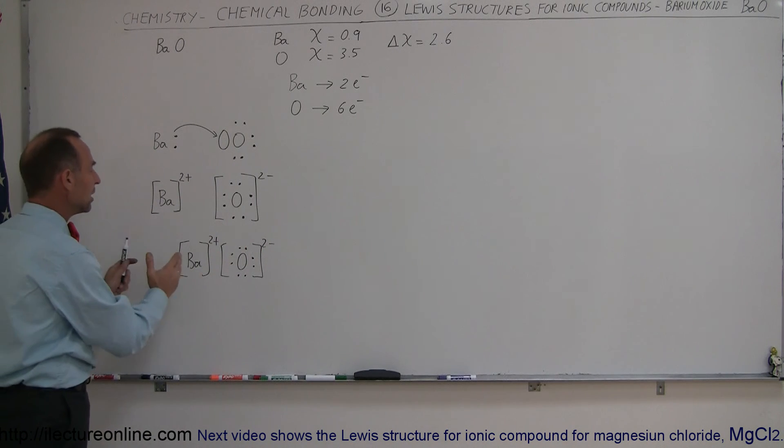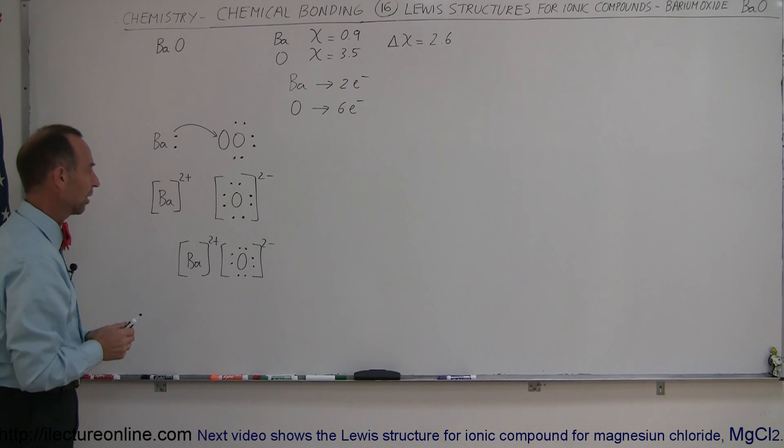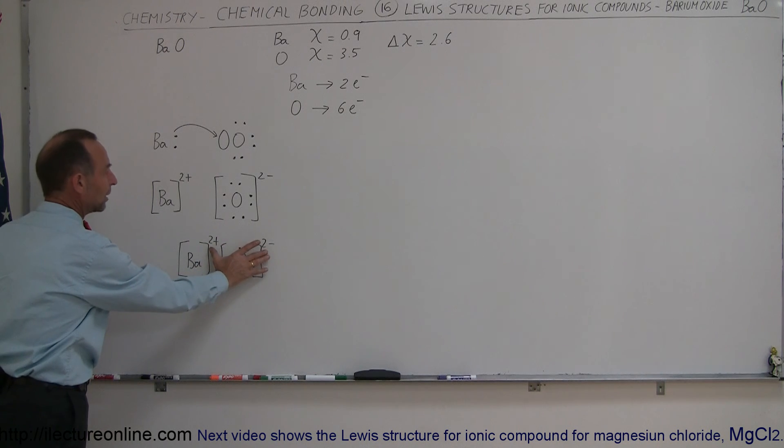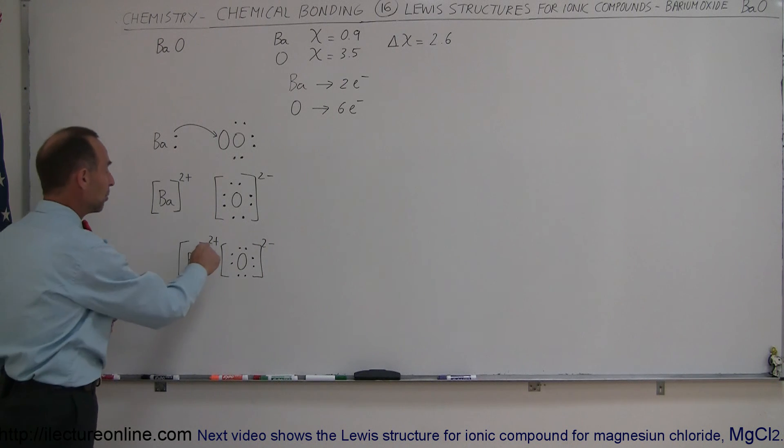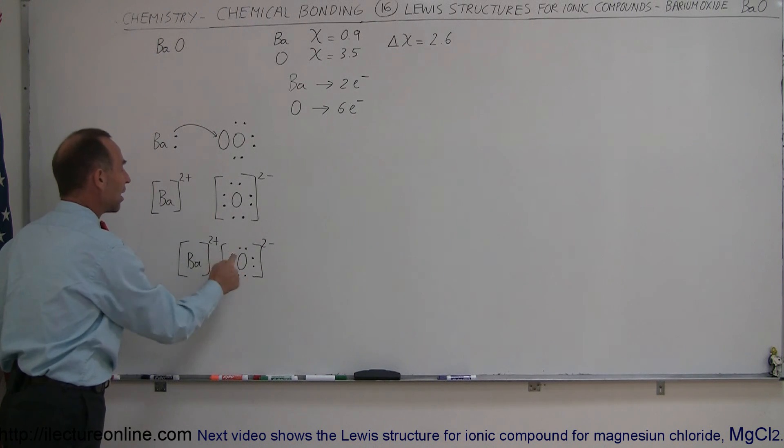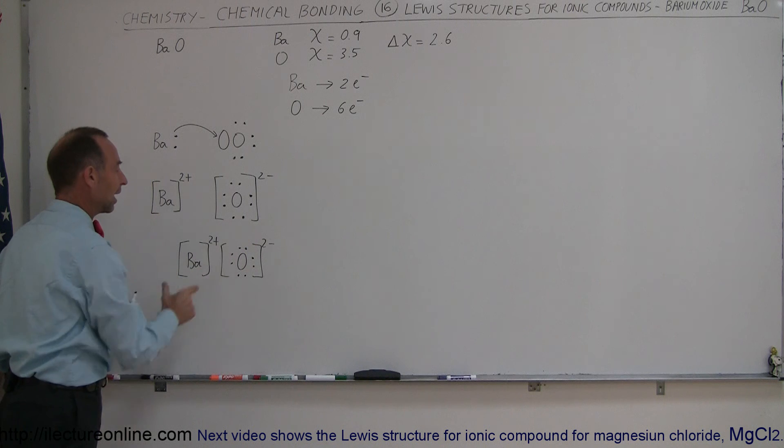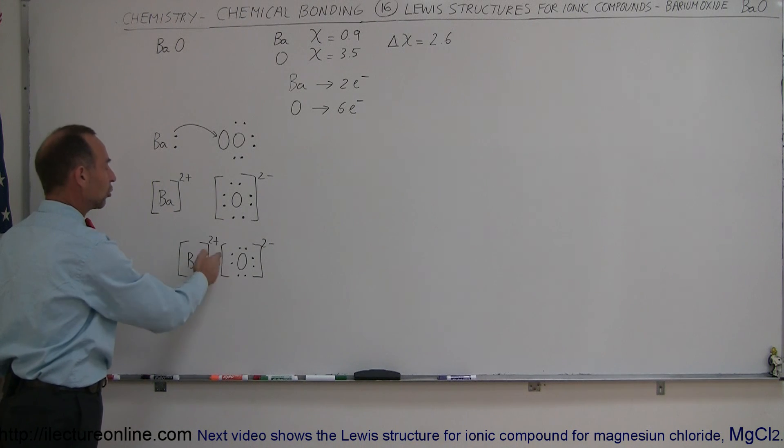The charges are indicated. We use the brackets to indicate that this is an ionic bond and we put the charges in of each ion as they're being bonded. So you can see that there's a net zero charge on the whole molecule.